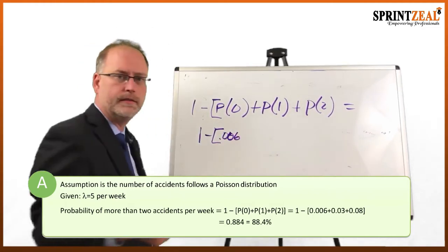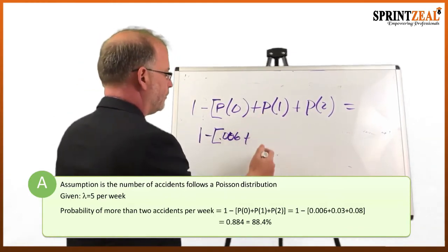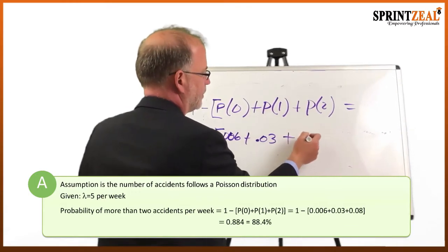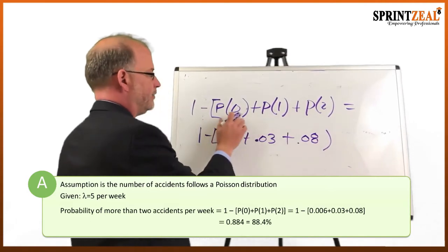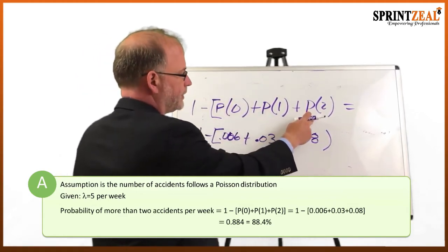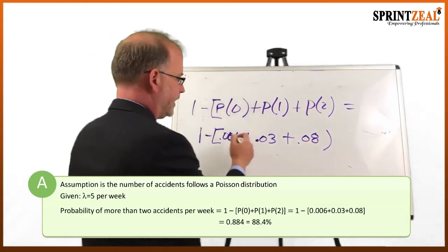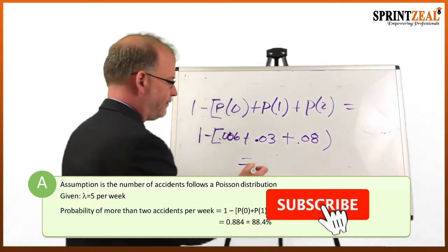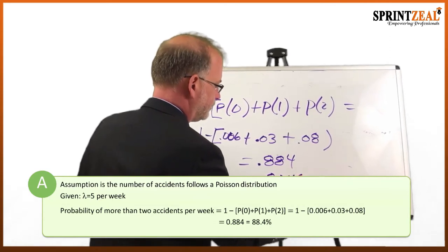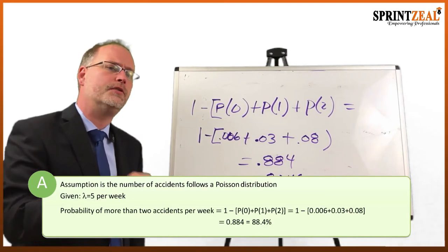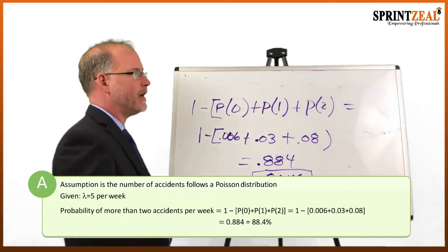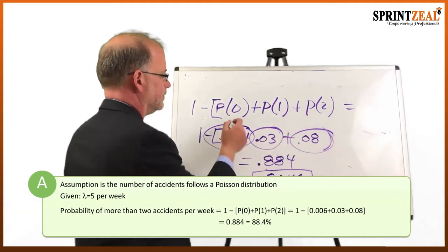So what that equals is: 1 minus [P(0) + P(1) + P(2)]. We recall that P(0) was 0.006, P(1) was 0.03, and P(2) calculates to 0.08. Closing the parentheses, this gives us 0.884 — that is, 88.4%. So the probability of more than two accidents happening per week is 88.4%. We're applying the Poisson formula multiple times to get our answers.